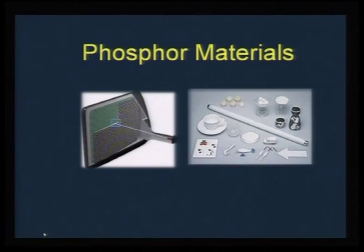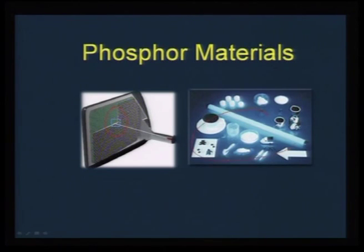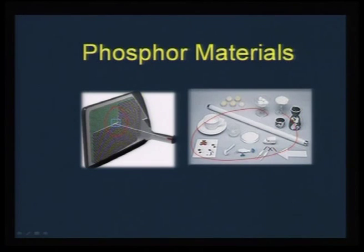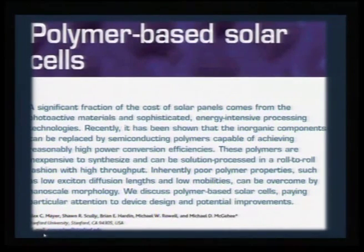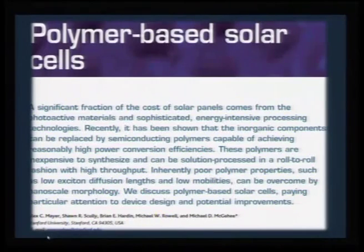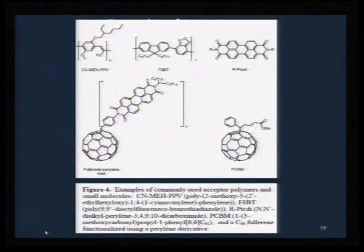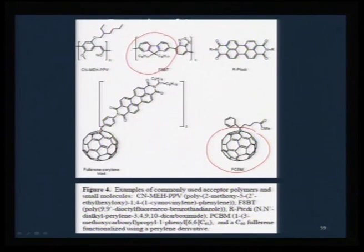I will also emphasize classic phosphor materials used specially in cathode ray tubes and several lighting applications, showing how materials chemistry plays a decisive role. I will also touch upon solar cells and how materials chemistry is transforming this area — especially polymer-based solar cells, which will provide flexible substrates and printable solar cells that can revolutionize energy applications. These candidates include fullerene-based and fluorene-based molecules that as blends form heterojunctions.